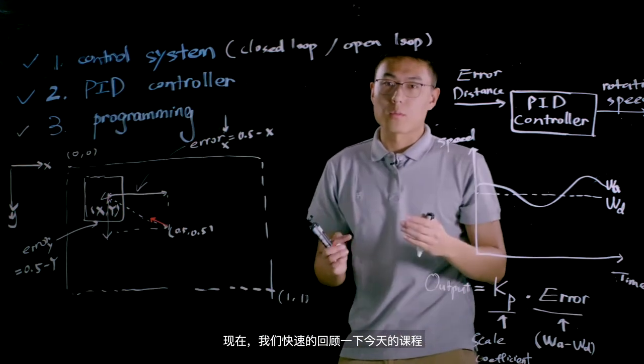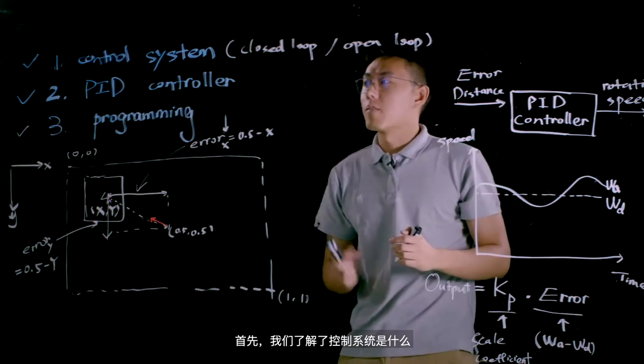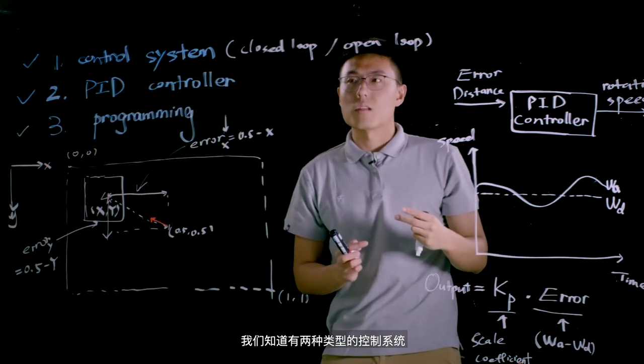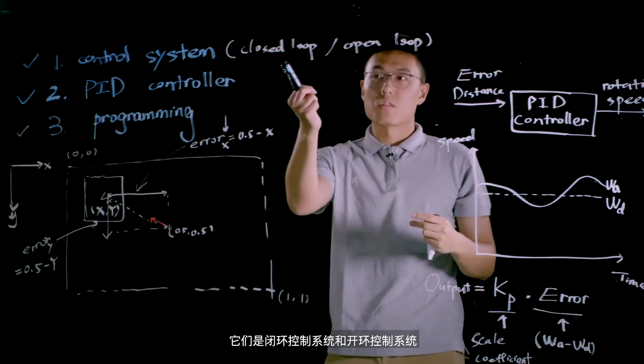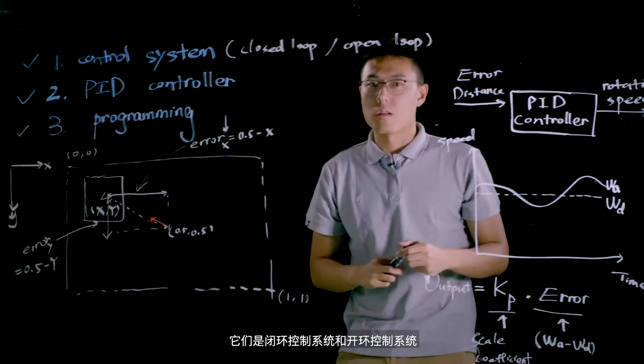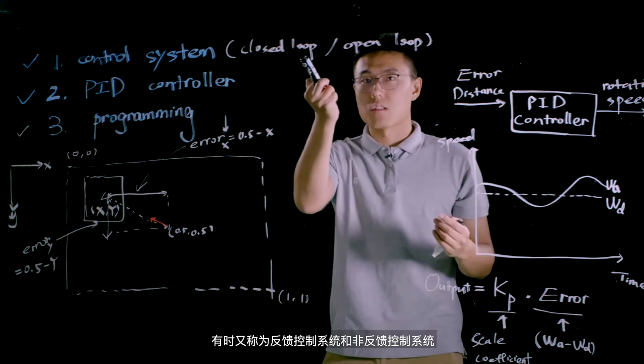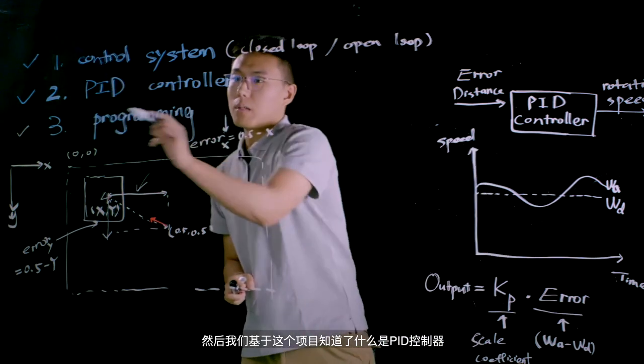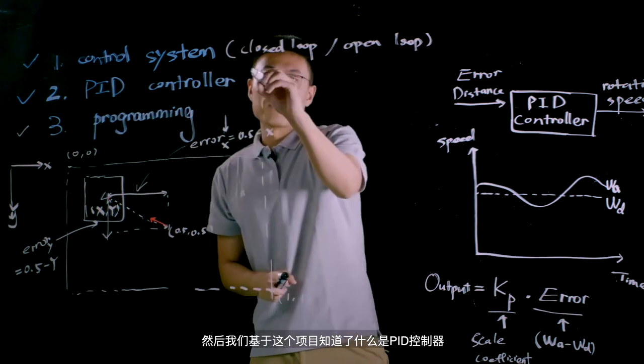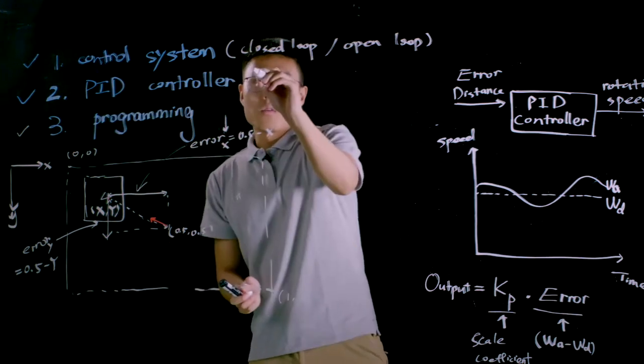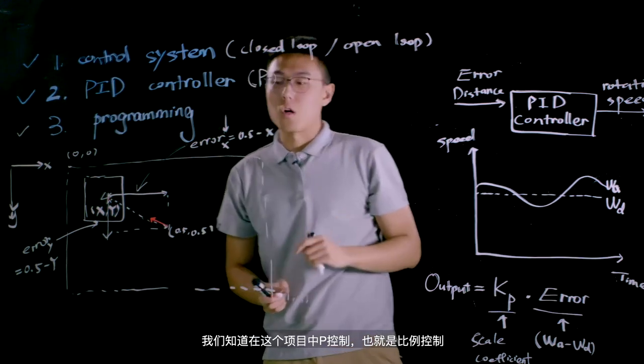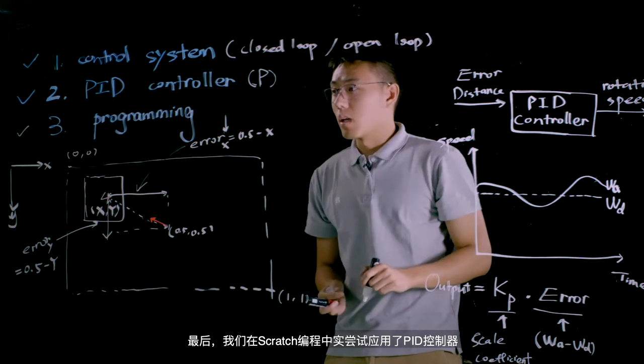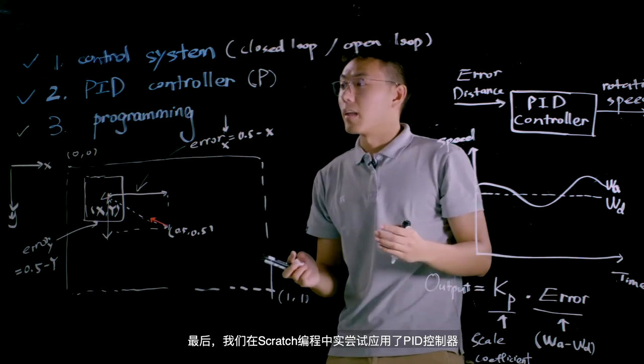Now let's do a very quick recap of today's lesson. First of all, we learn what the control system is. And we know there are two types of control systems, and they are closed-loop control system and open-loop control system. Sometimes they are called feedback control system and non-feedback control system. Then we know what the PID controller is based on this project. We know how P control or proportional control works in this project. And in the end, we implement the PID controller in the scratch programming.